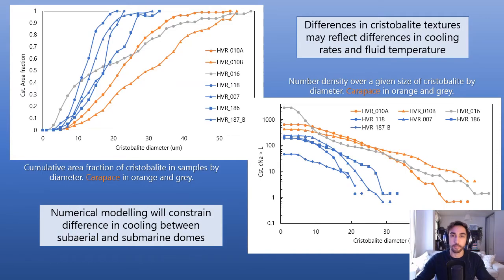Samples from the carapace directly above the vent have numerous large cristobalite crystals with characteristic fracturing, and the remnant groundmass is almost entirely void of glass as a result of dissolution.